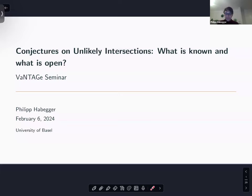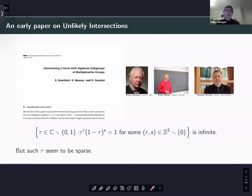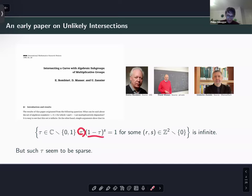I'll start over 20 years ago with one of the first papers I got to know about this subject, which was quite influential at the time. We have three authors: Enrico Bombieri, David Masser, and Umberto Zannier. The paper was published in IMRN 1999. The set of non-zero complex numbers τ not equal to one such that τ and 1−τ satisfy a multiplicative relation — this set is easy to see is infinite.